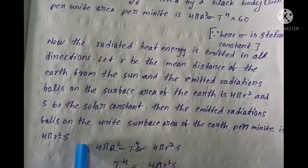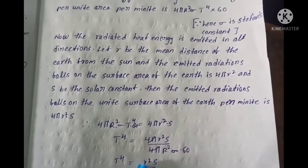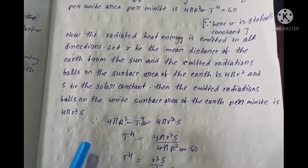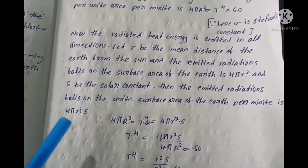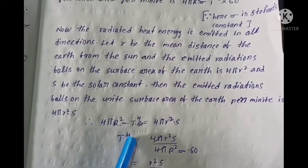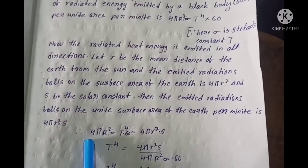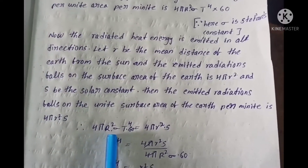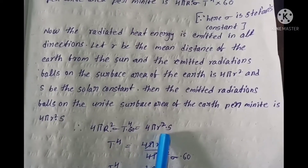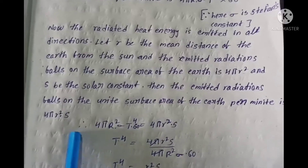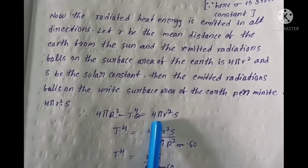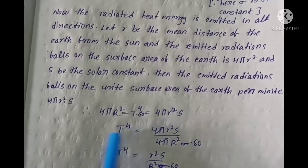Now we calculate the temperature of the sun. If the emitted radiations from the sun and the absorbed radiations of the earth are equal, then: 4πr² × σT⁴ × 60 = 4πR² × S, where S is the solar constant.